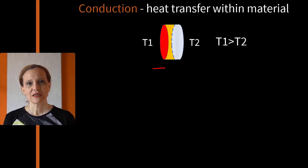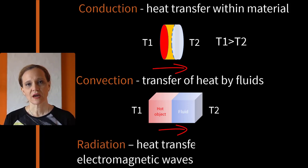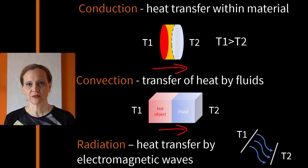Heat transfers from one body to another in three different ways. Conduction – internal energy is exchanged from one body to another due to temperature gradient. Convection – energy is exchanged between a solid body and surrounding fluid. Radiation – energy is transferred between bodies by electromagnetic waves.